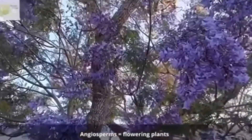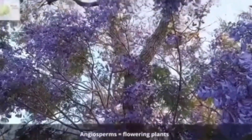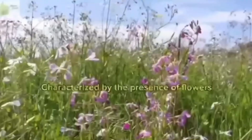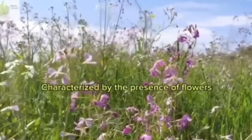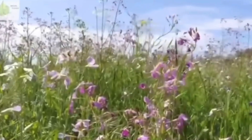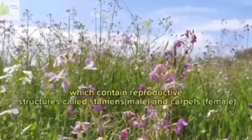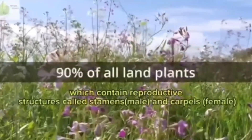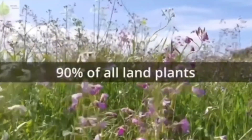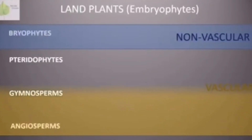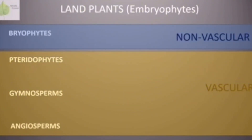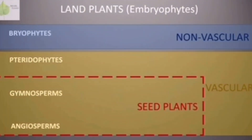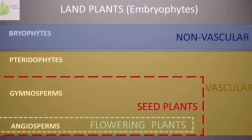Lastly, angiosperms, or flowering plants, which cover most of our earth. They are characterized by the presence of flowers and reproduce using flowers which contain reproductive structures called stamens and carpels. As you can see, this table characterizes plants into non-vascular and vascular plants, and also into seed plants and flowering plants.